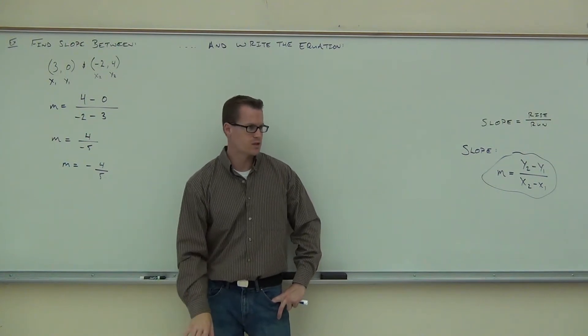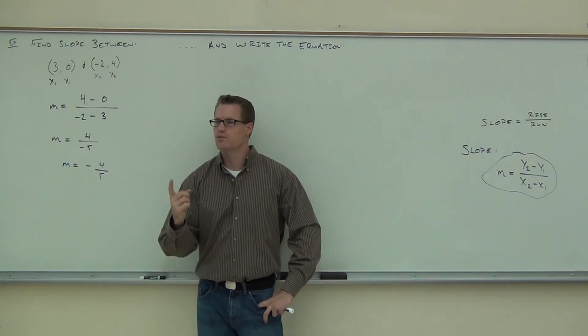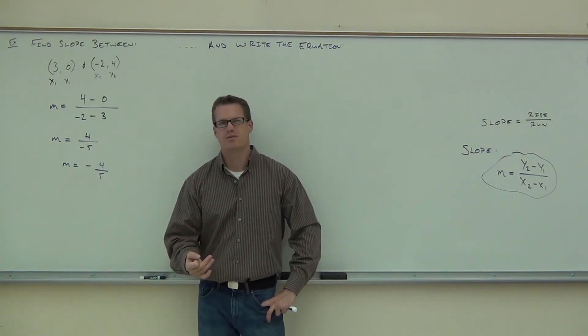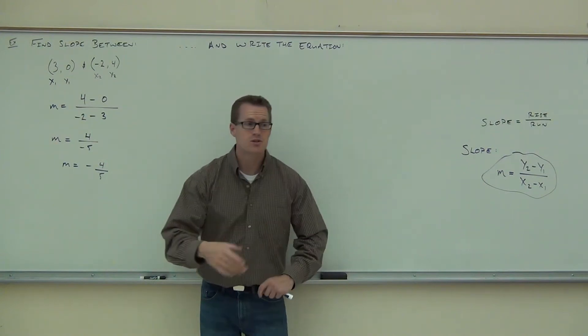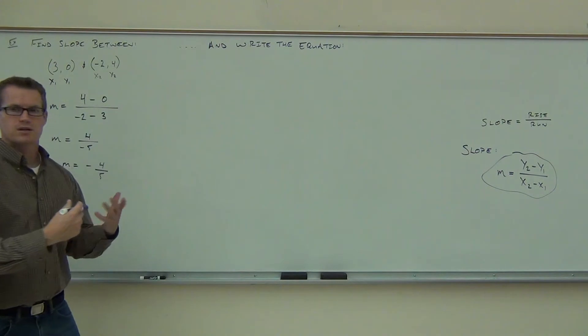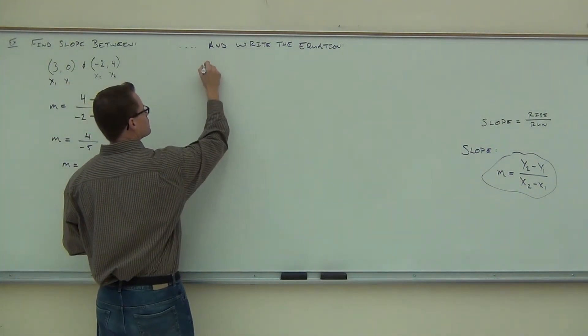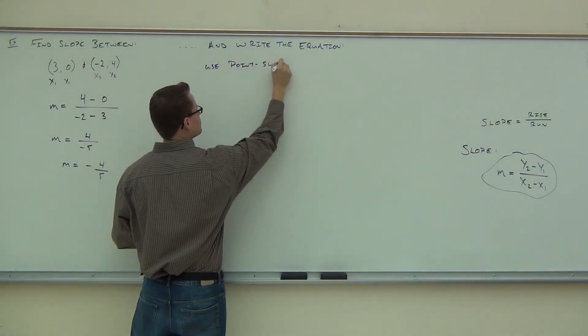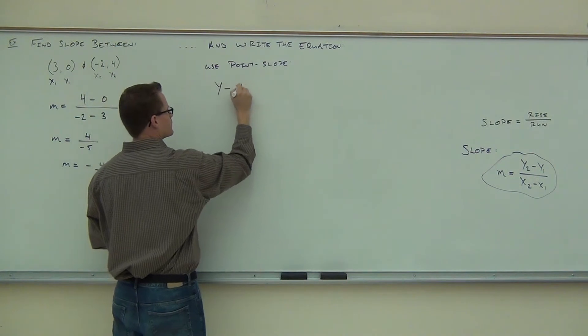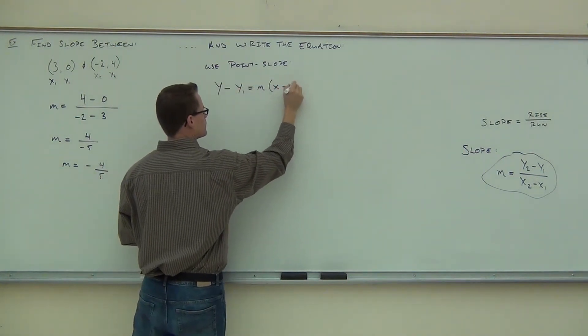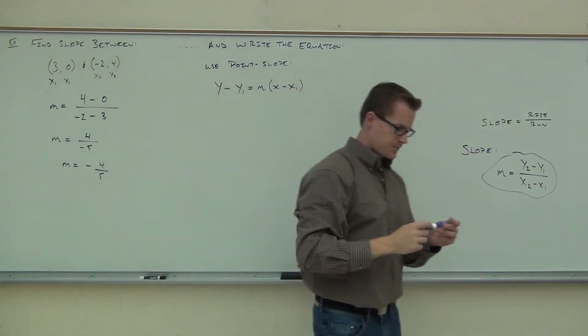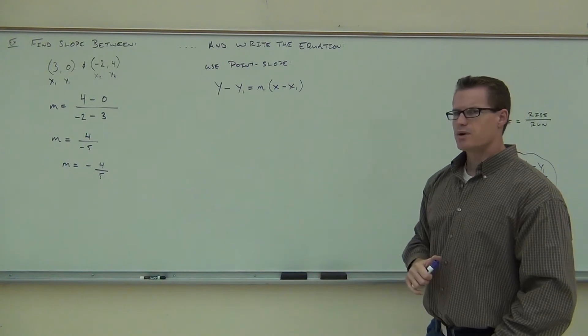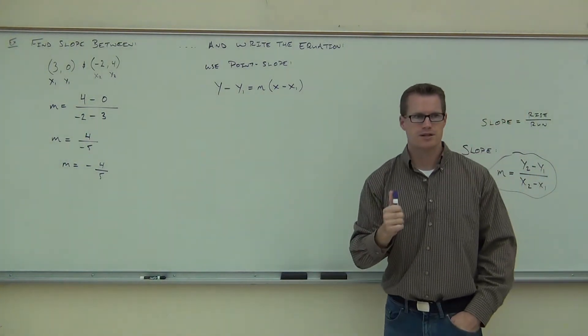So we don't have those two forms that we can use. That leaves us with only one form we can choose. This is the form you're going to be using 90% of the time. You're going to be using point-slope because you're given a point and now you found a slope.